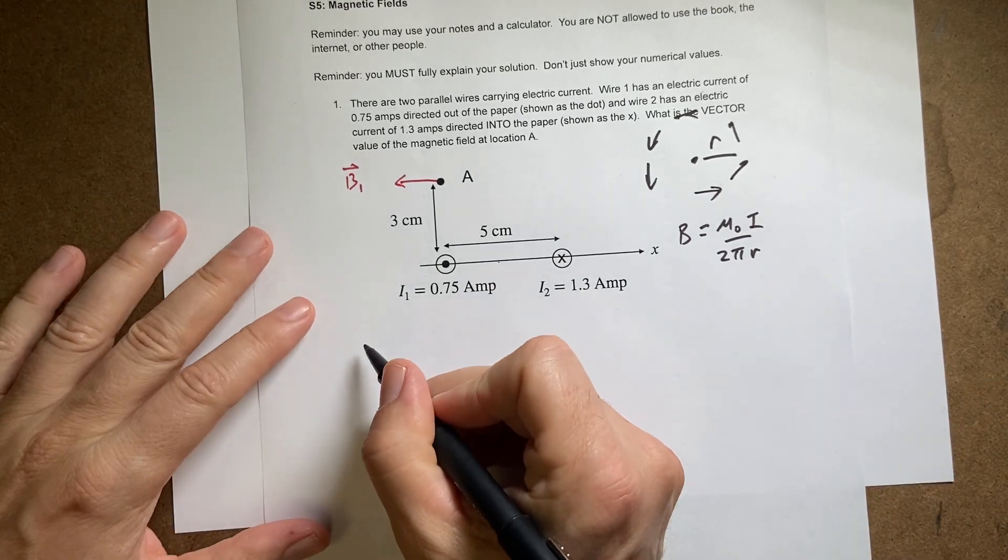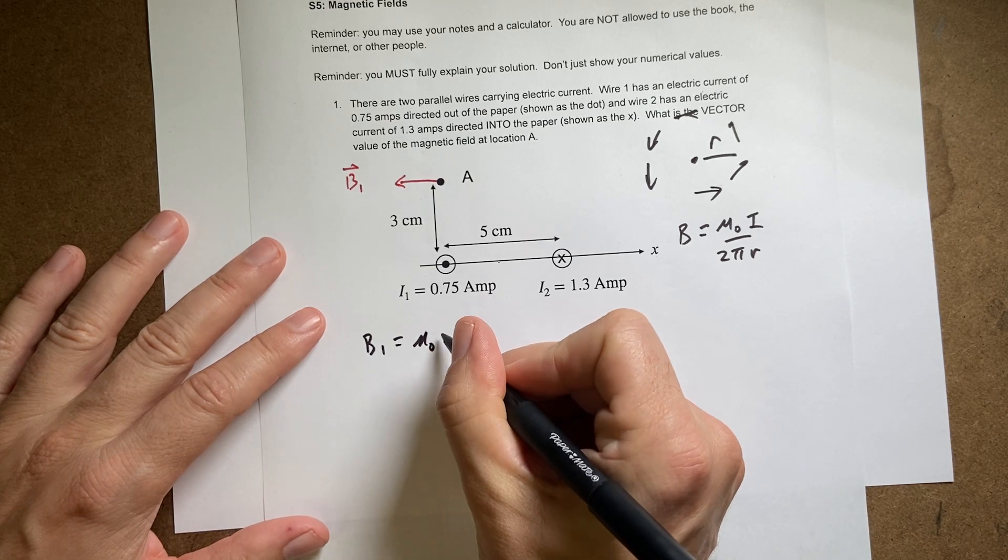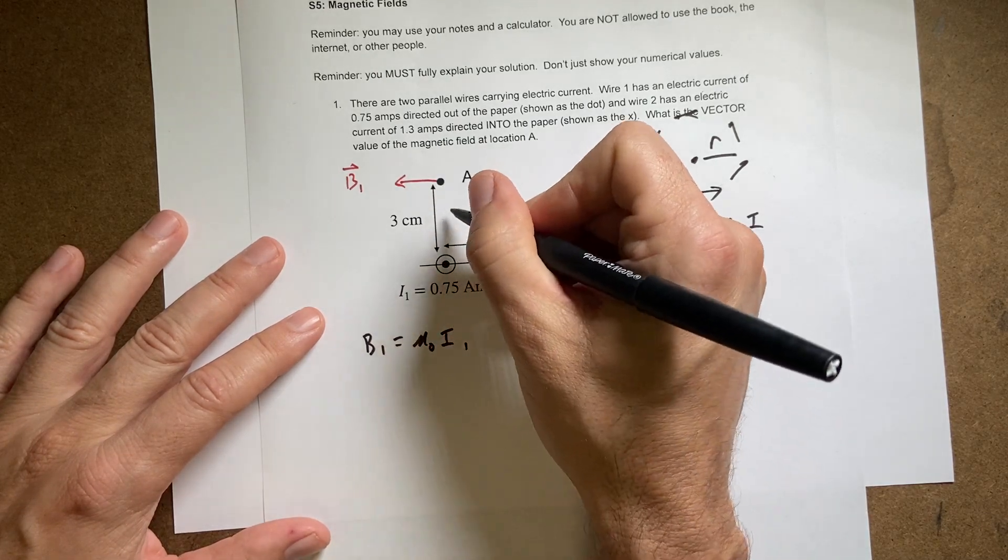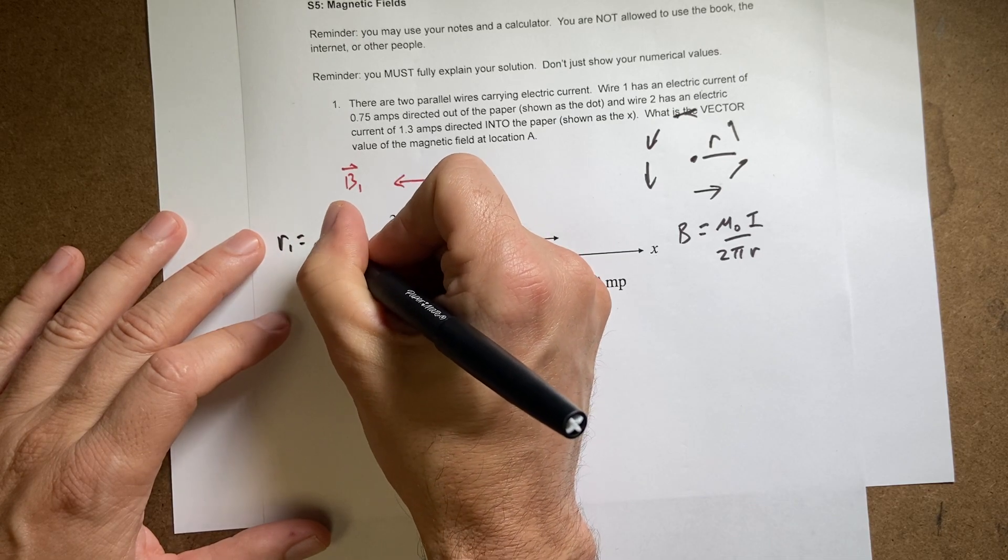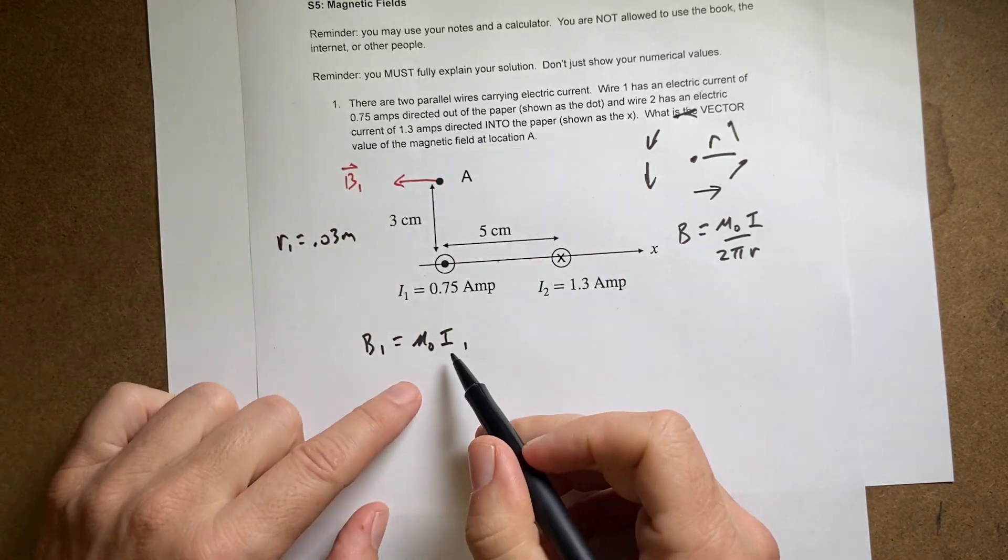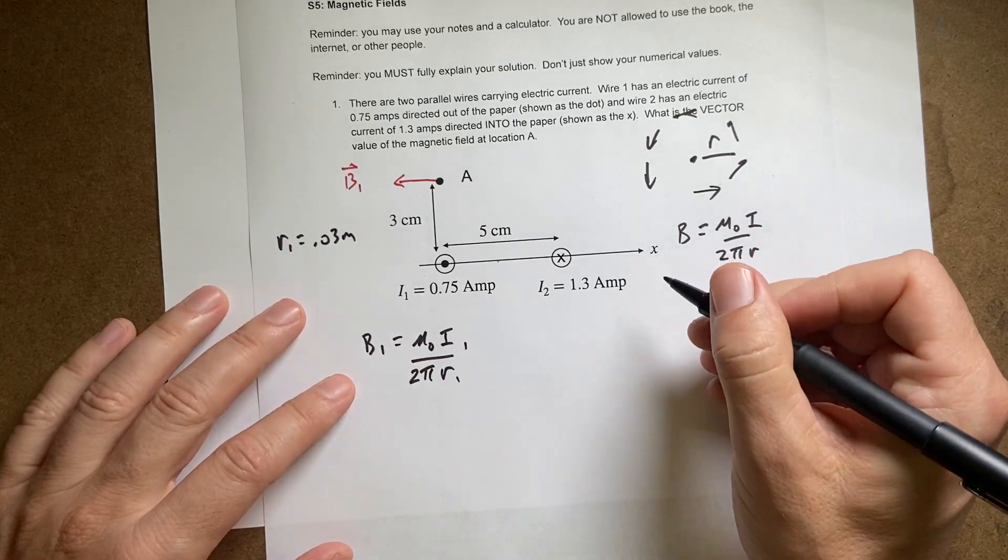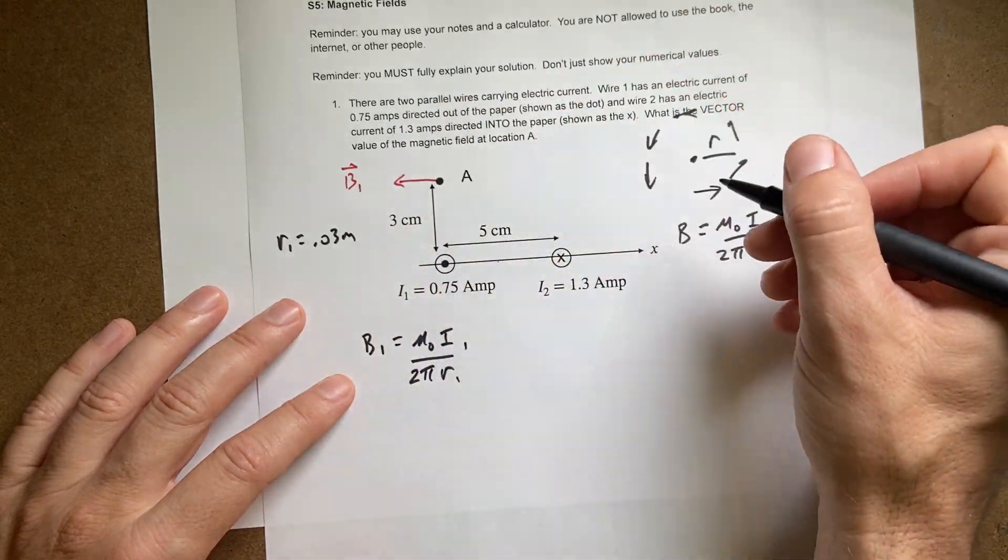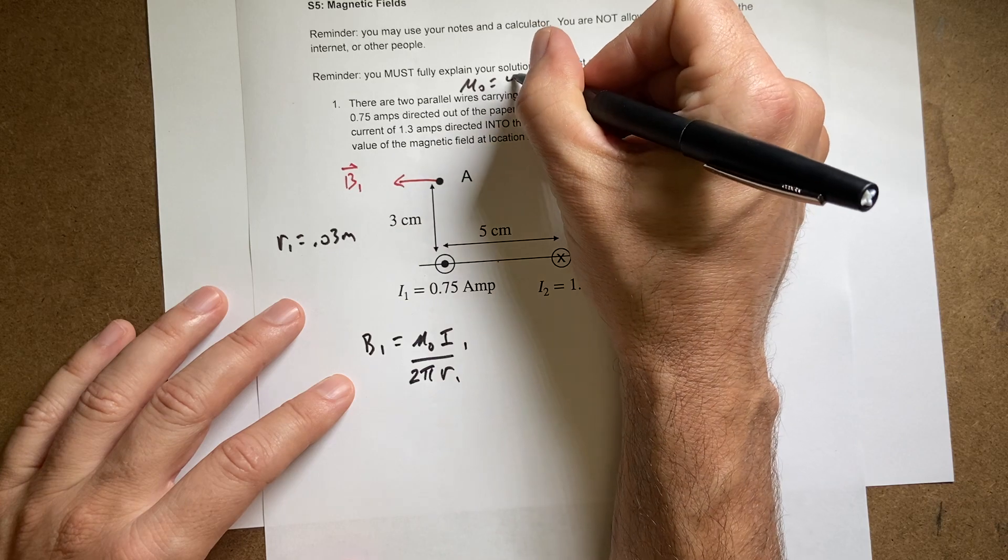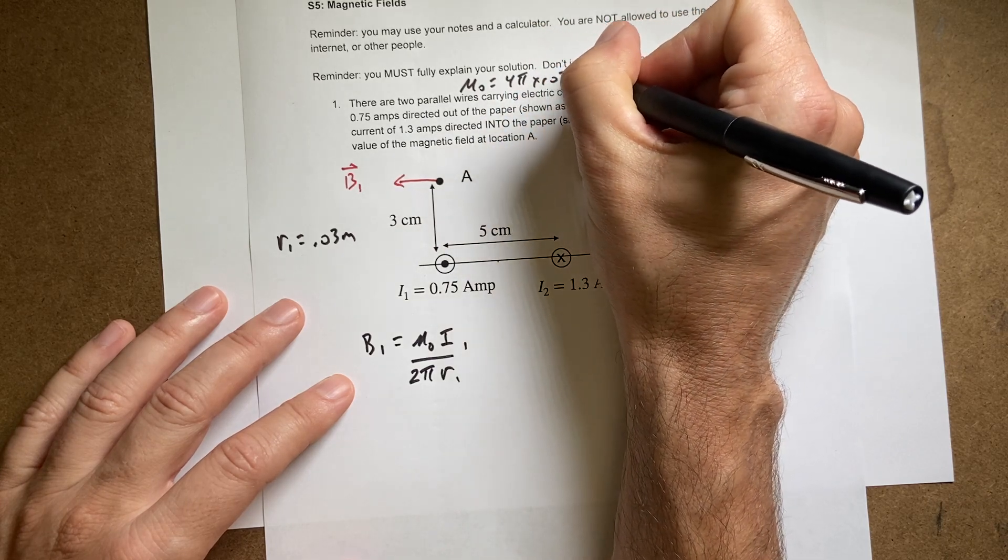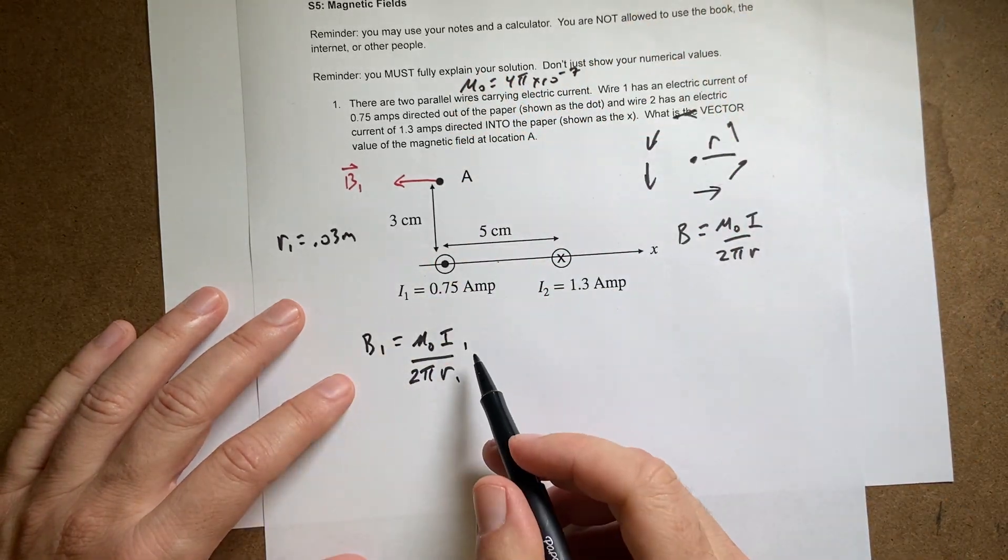Let's first find the magnitude B₁. B₁ is going to be equal to μ₀I₁/(2πr₁). R₁ equals 0.03 meters. Remember that μ₀ equals 4π × 10⁻⁷. Don't worry about the units for now.